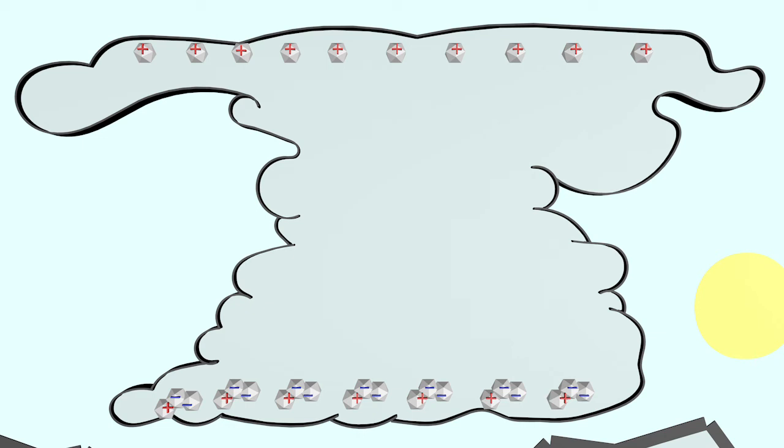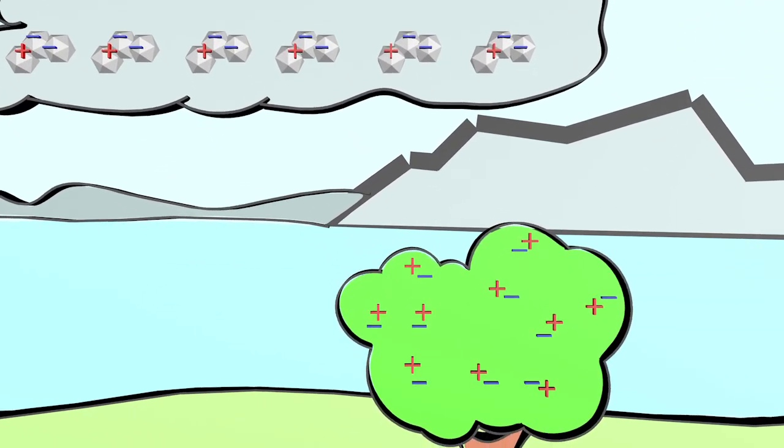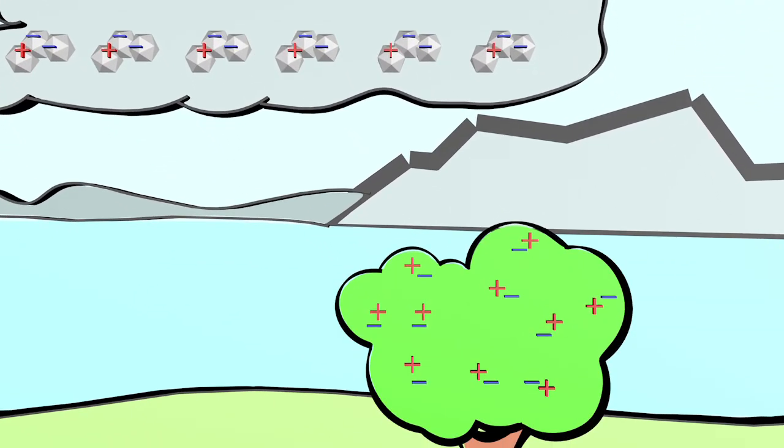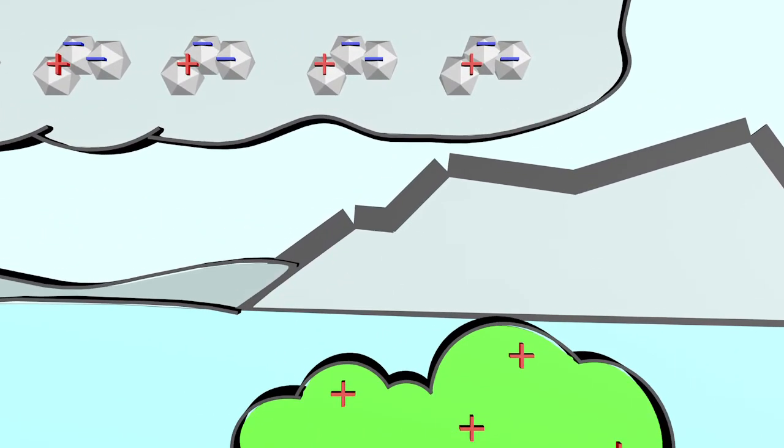Let's take a look at the lightning going towards the earth. The negative charges at the lower end of the cloud push electrons down in a tree, for example. As charges of the same name repel each other, the tree, which is now positively charged, attracts the excess electrons from the cloud. Some electrons are now flowing through the air towards the tree. As a result, the air is heated extremely strongly at this point, so that it glows. The lightning occurs.